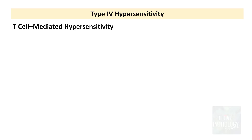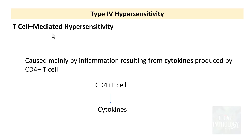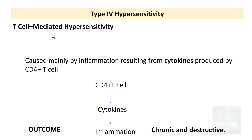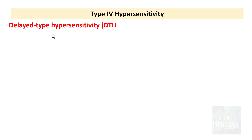Type 4 hypersensitivity is also referred to as T cell mediated hypersensitivity, which is caused mainly by inflammation resulting from cytokines produced by CD4 positive T cells. Most often inflammation is chronic and mononuclear, and the antigens implicated can be environmental antigens as well as self antigens. To understand more, let us see delayed type hypersensitivity, which is the prototype of T cell mediated inflammation.